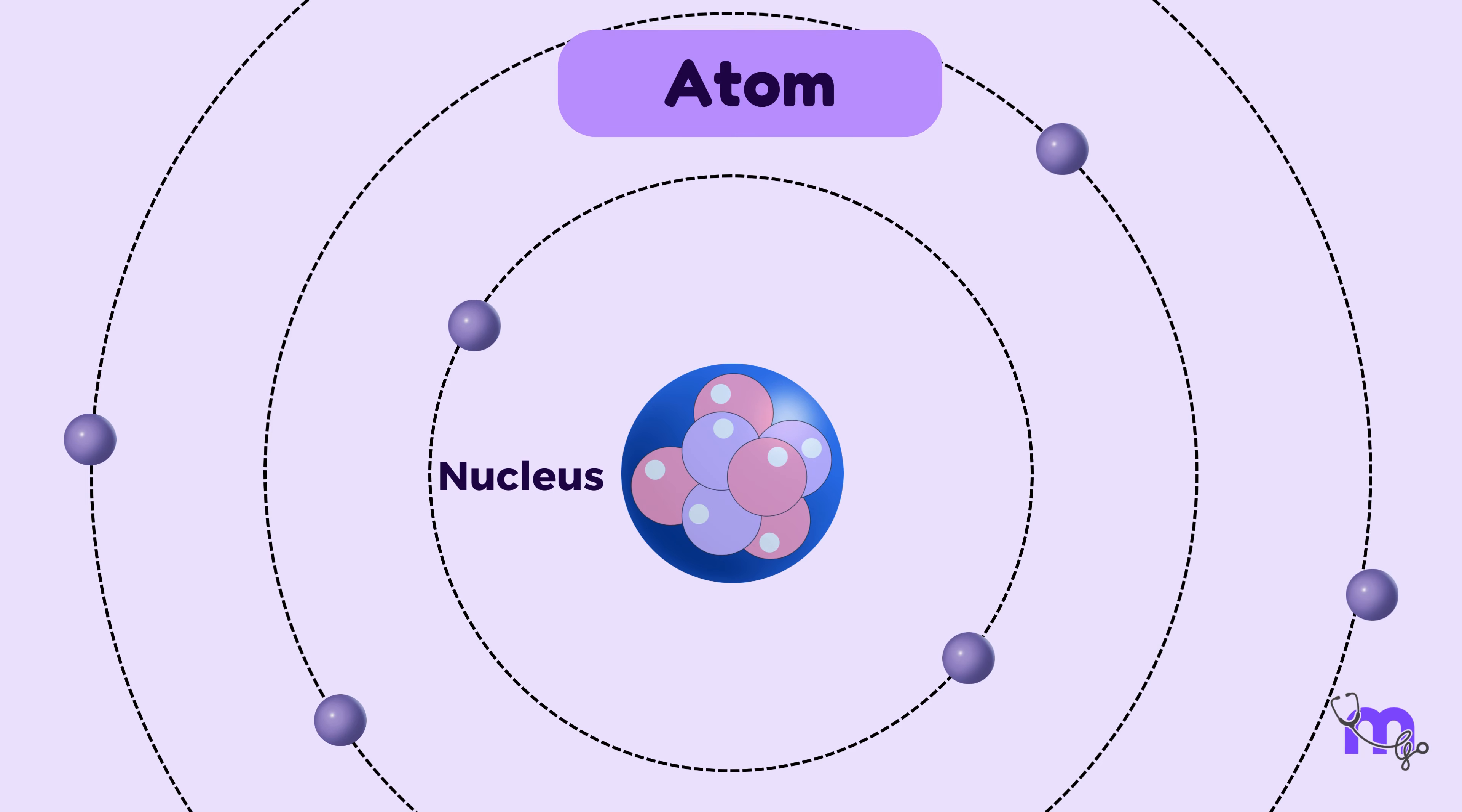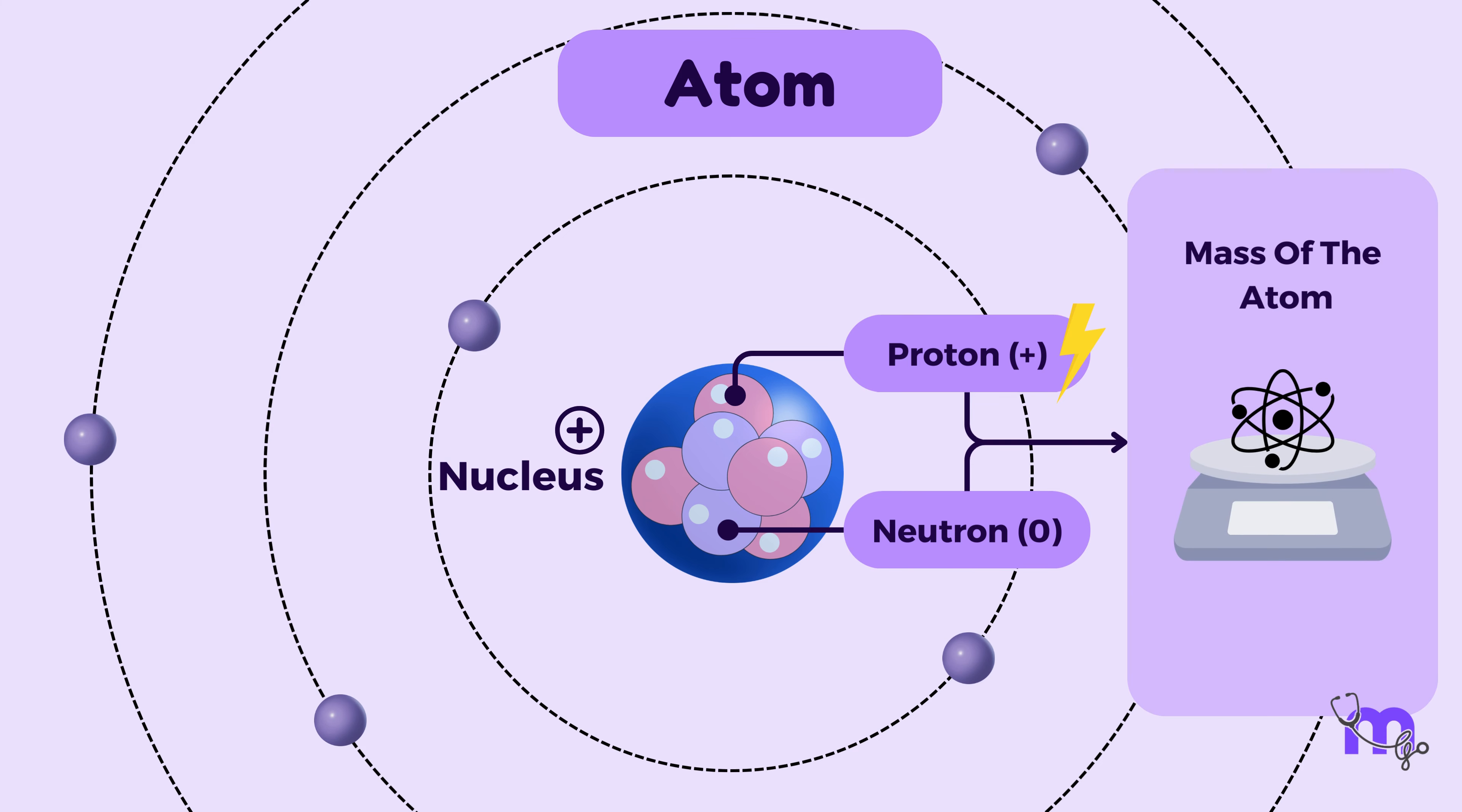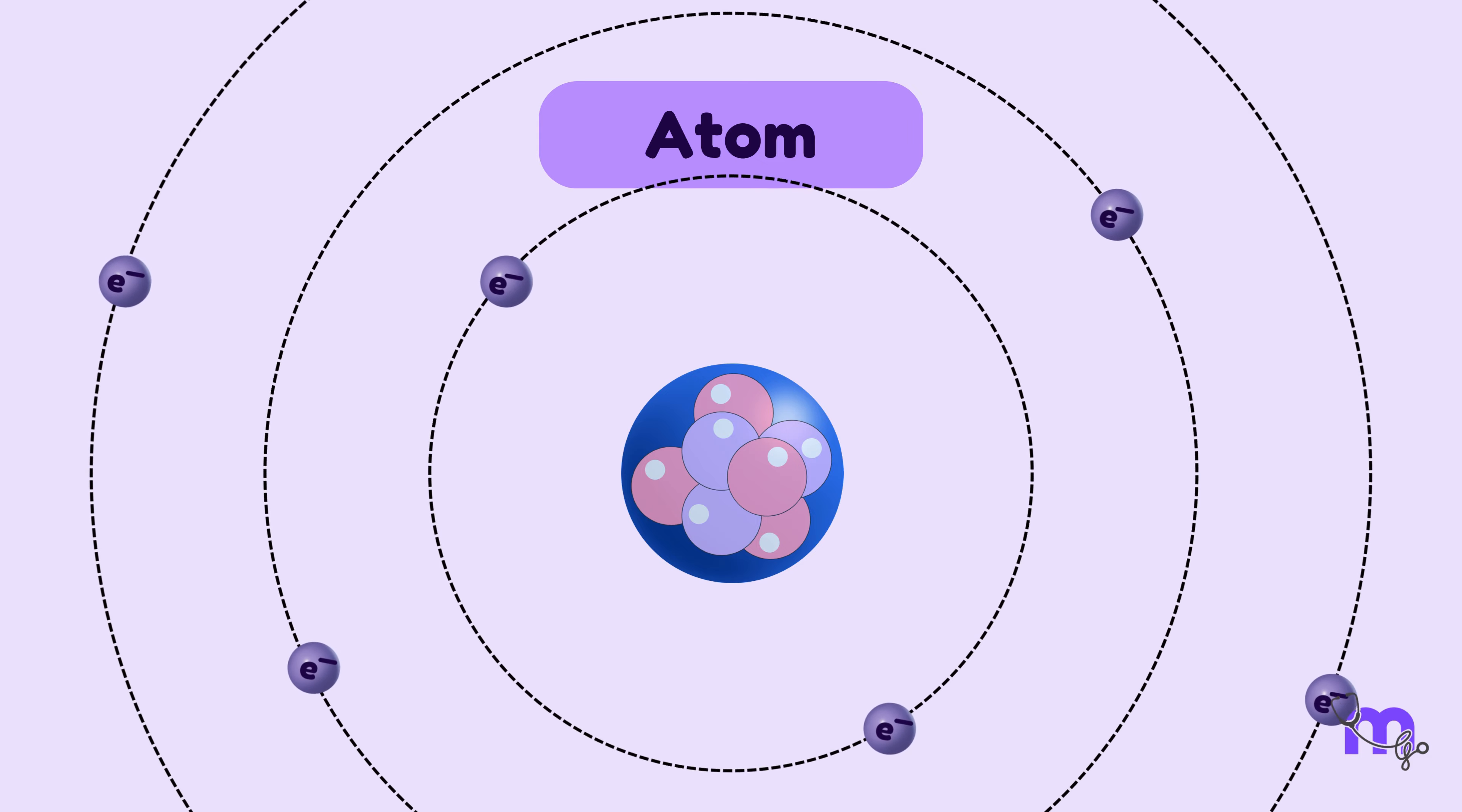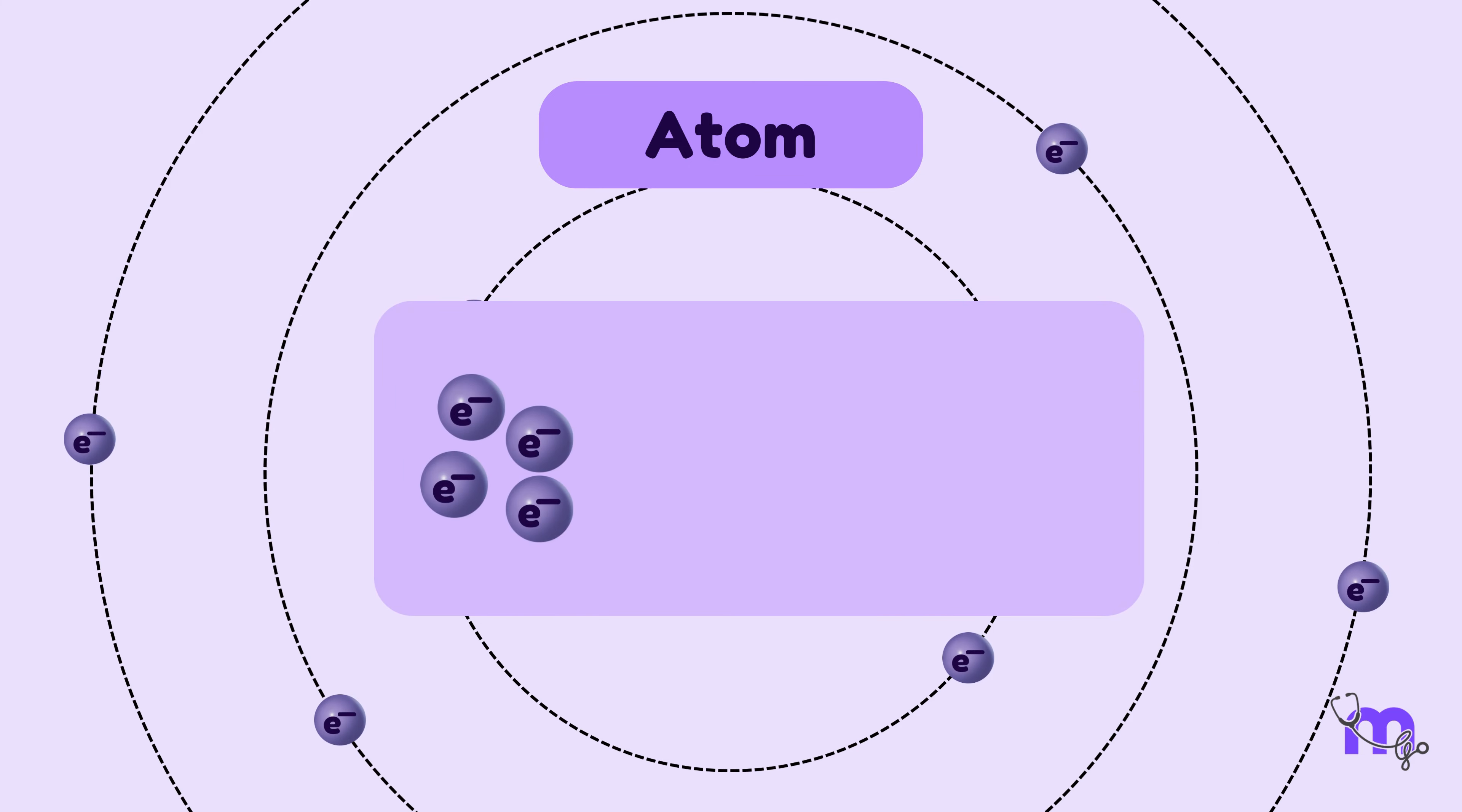It is made of positively charged protons and neutrons that carry no charge, and hence the nucleus is positively charged. Together they make up for the mass of the atom or the atomic mass. Similar to the planets in the solar system, negatively charged electrons orbit the nucleus of the atom in their specific paths called shells. These electrons make up the atomic number of an element.